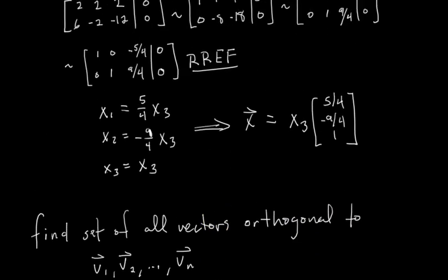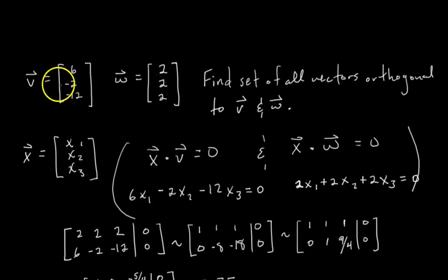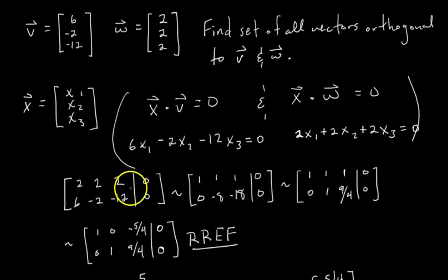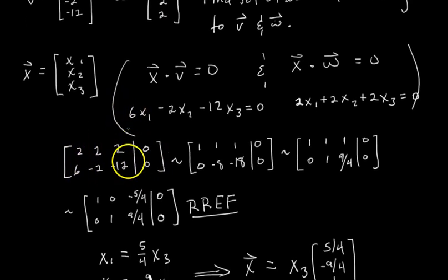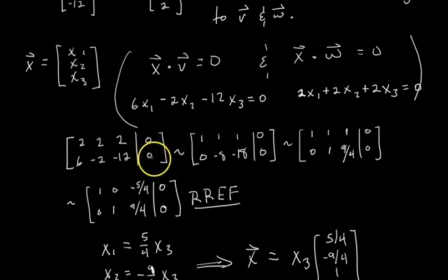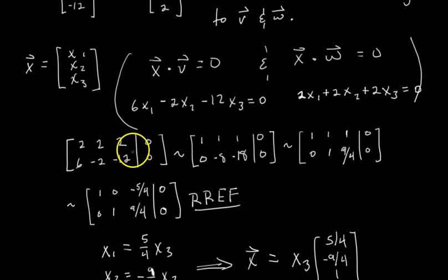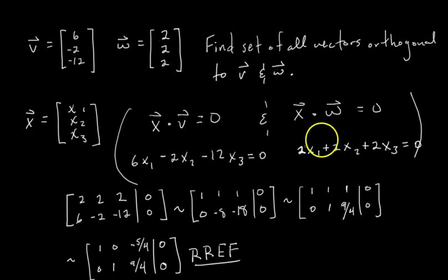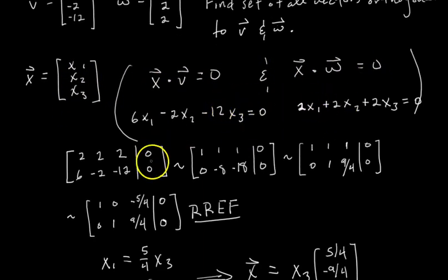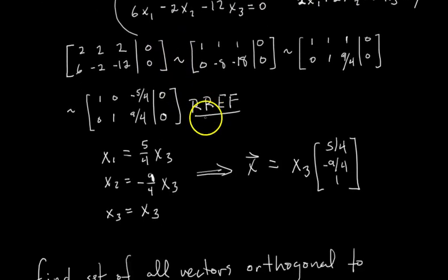Let's check and make sure that's what we did earlier. We had these vectors V and W, and look, we put it in this augmented matrix like this, where we turn them sideways and smush them together. We get matrix A [6, -2, -12; 2, 2, 2]. Then by row reducing with the zero vector as our augmented column, we're finding the null space of that matrix A.